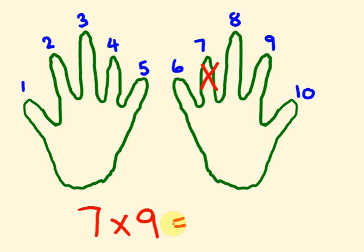So we fold this finger over and then we count the number of fingers on this side which is six, one two three four five six, and the numbers on this side of the folded over finger, three. The answer is 63 and that's the way you can use your hands to work out the nine times table.